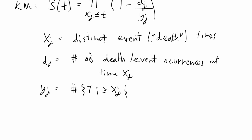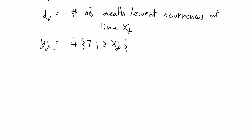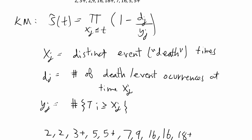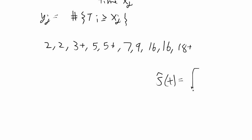The first thing I'm going to do is order the observations: 2, 2, 3 (this observation is censored because it has a plus next to it), then 5, 5+, 7, 9, two 16s, and 18 which is the last observation and is also censored. I'm going to estimate the survival curve, which changes at each time where a death or event occurs, starting from the smallest observation and going to the largest.